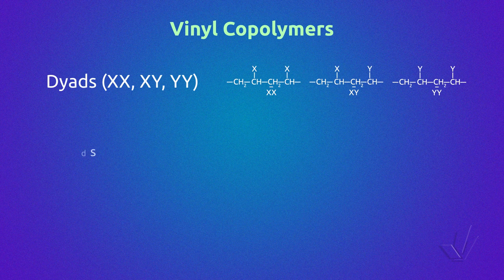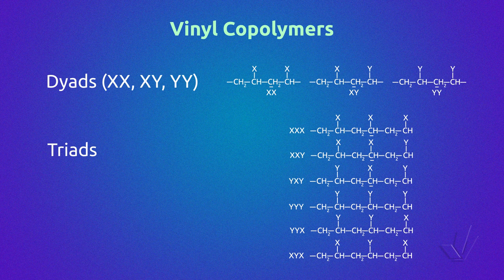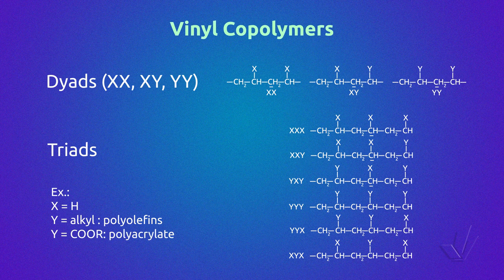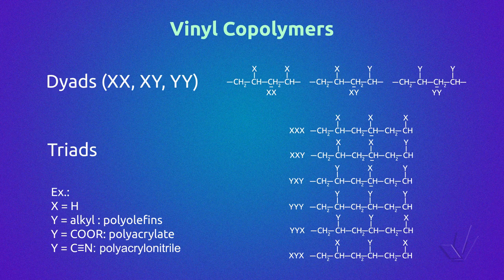Vinyl copolymers are formed by a methylene carbon, a methine carbon that is asymmetric, and a substituent. If X is a proton and Y is an alkyl group, we have polyolefins — for example, an ethylene-propylene copolymer where Y is a methyl. If Y is an ester, we can have a copolymer unit that is a polyacrylate; if one of the substituents is a nitrile, we can have a polyacrylonitrile unit, and so on. All this family of copolymers will have 3 diads and 6 triads, as seen in this figure.